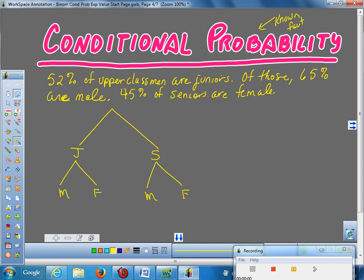You put your letters at the bottom of each branch. You label the actual branches with the probability they're going to occur. So, if there's a 52% chance of getting a junior, that's 0.52. That means my probability of getting a senior is 0.48. Then, go do the males and females. 65% are male. For seniors, 45% are female, which means 55% are male.